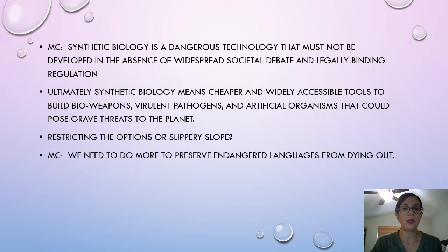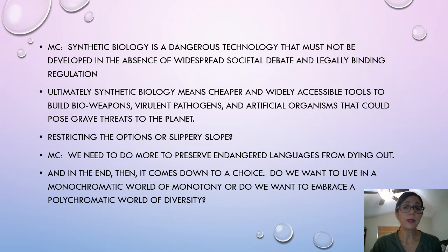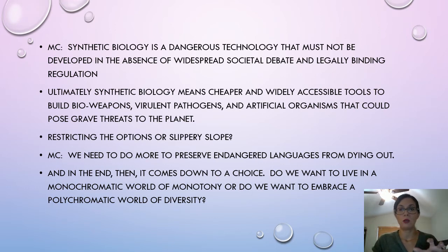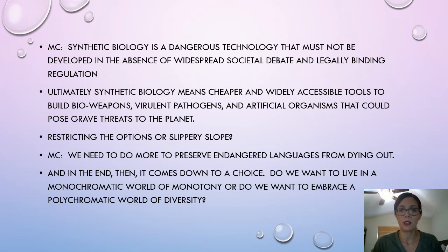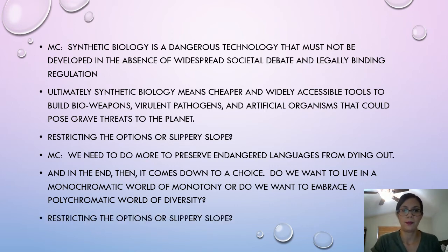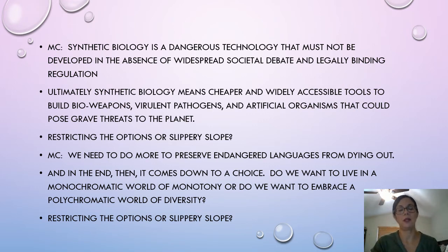Then we have an example about preserving endangered languages. At the end of the passage, the author says: 'In the end, it comes down to a choice — do we want to live in a monochromatic world of monotony, or do we want to embrace a polychromatic world of diversity?' Notice two stark options. If we don't save endangered languages we'll be monochromatic; if we do, we'll be diverse. But not doing everything possible doesn't mean we'll be monochromatic — there are already many languages. Because it oversimplifies into an either-or scenario, this is restricting the options.